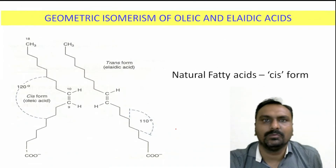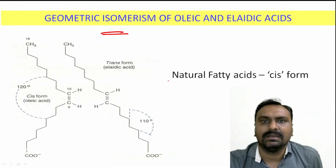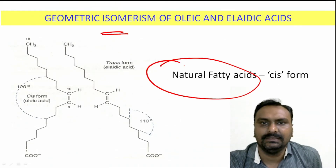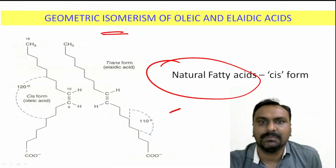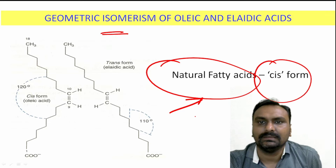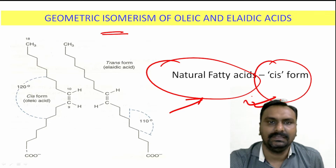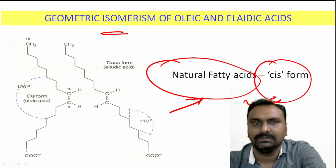Solubility is decreased with increase in the hydrocarbon chain, and this solubility increases with increasing temperature. Coming to the isomerism of the fatty acids, naturally occurring fatty acids present in vegetable oils — that is, unsaturated fatty acids — are cis in nature.